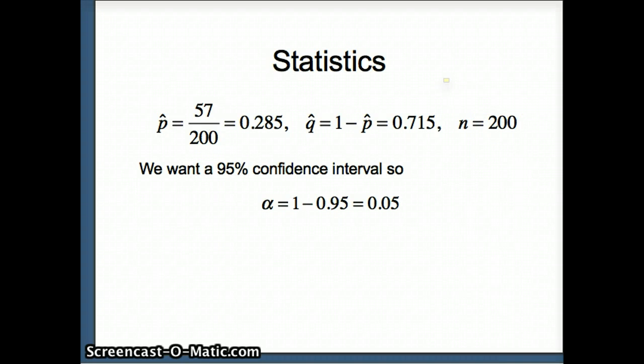We want a 95 percent confidence interval, so to do that we're going to find alpha, and alpha is simply 1 minus that confidence level. So alpha is 1 minus 0.95 or 0.05, and we need alpha divided by 2, so alpha divided by 2 is 0.025. And our formula requires z alpha by 2, and in this case z alpha by 2 would be z of 0.025.